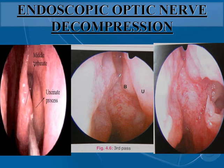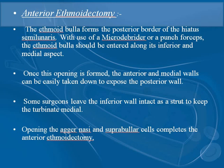For the endoscopic optic nerve decompression, the steps begin with identifying the middle turbinate and the uncinate process. An uncinectomy is performed. Then anterior ethmoidectomy is done — the ethmoid bulla forms the posterior border of the hiatus semilunaris. Using a microdebrider or punch forceps, the ethmoid bulla should be entered along its inferior and middle aspect. Once the opening is formed, the anterior and medial walls can be taken down to expose the posterior wall. Opening the agger nasi and suprabullar cells completes the anterior ethmoidectomy.